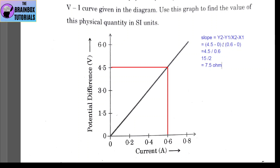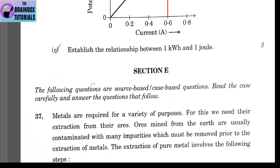The relation between 1 kWh and joules: 1 kWh equals 10⁶ J (3.6 × 10⁶ J).